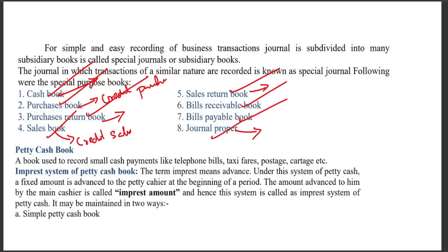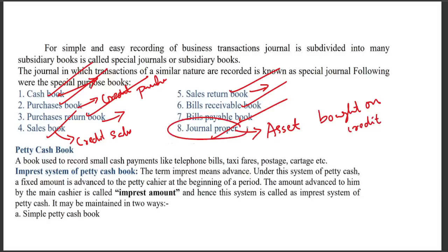The general journal is used for transactions that do not fit in any subsidiary book — for example, an asset bought on credit would be recorded in the general journal.